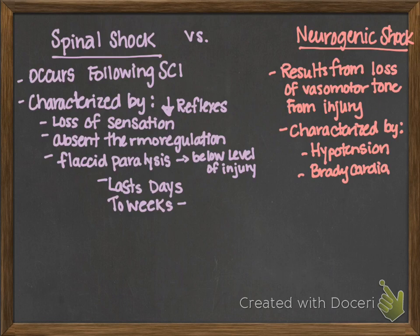An example would be someone who was in a motor vehicle accident and had an injury to like L5 or whatever, and they were paralyzed initially — and then they got all their feeling back and could walk. That is usually caused by spinal shock.